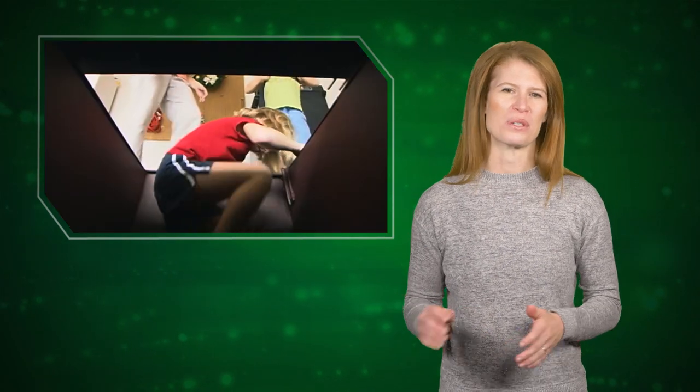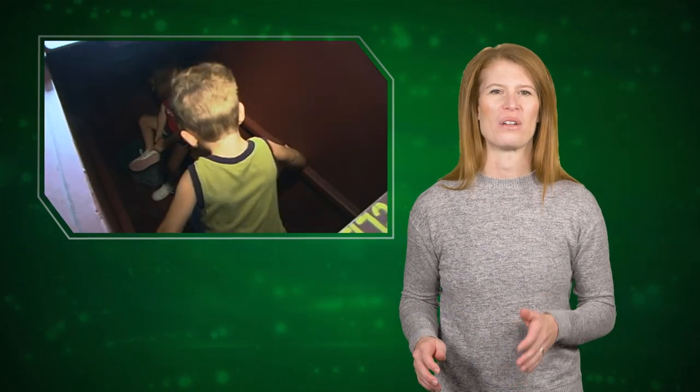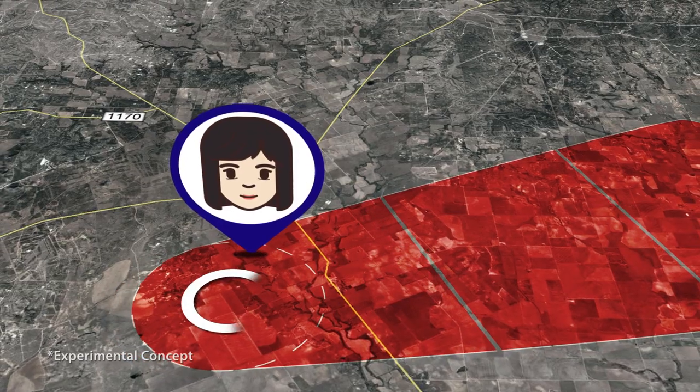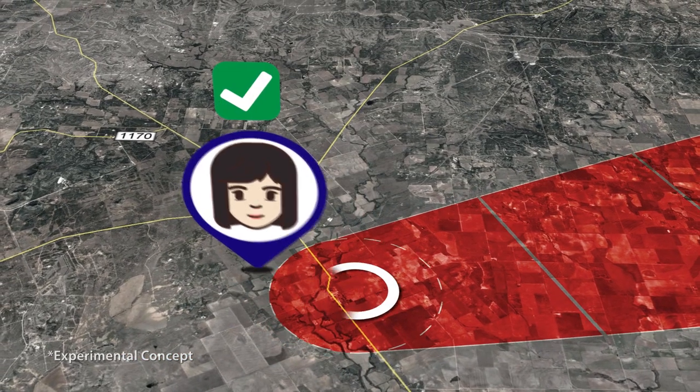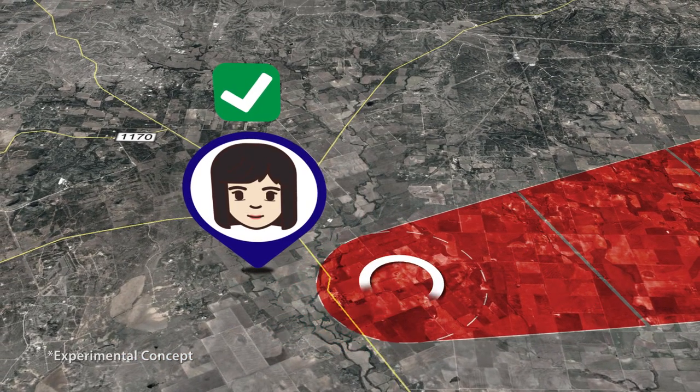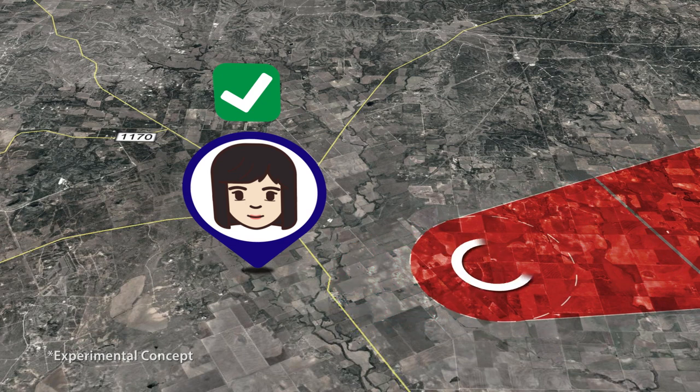Threats in Motion will also improve how long you and your family need to stay in your shelter. Notice Jane's location — once the threat moves past her, she receives an all-clear notification. It's a better, more seamless way of letting people know not only when they're in the threat area, but almost as importantly, when they're out of it and when they can come out of their shelter.